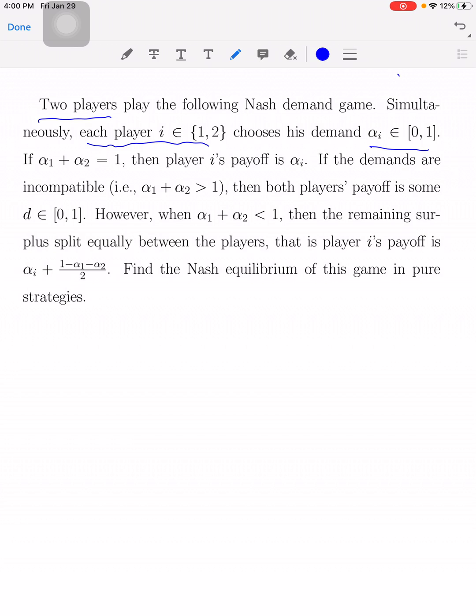If alpha 1 plus alpha 2 is equal to 1, so to speak, if the demands are compatible, then player i's payoff will be simply alpha i.